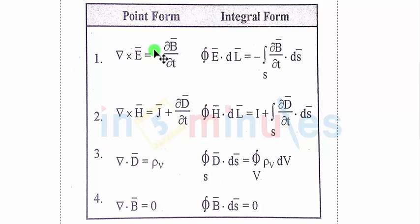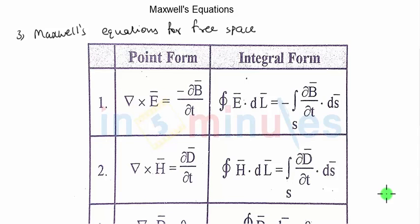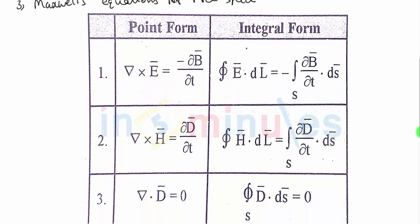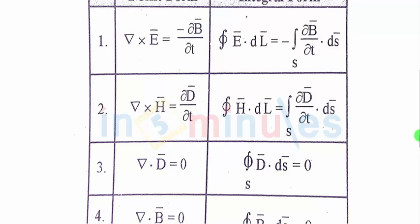These are the four equations defined for time-varying fields. Let us now discuss another set of Maxwell's equations defined for free space. In free space, the conduction current density J-bar and the volume charge density rho-v are both zero. So Maxwell's equations for free space are obtained by setting J-bar equal to zero and rho-v equal to zero, as shown in this table. These equations are also valid for good dielectrics because in a good dielectric J-bar is zero and rho-v is again zero.